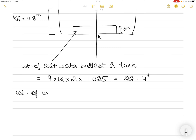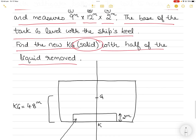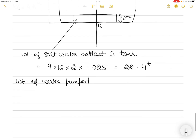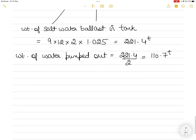The weight of the liquid pumped out is half of the total, because half the liquid was removed. So: 221.4 ÷ 2 = 110.7 tons. Alternatively, you could have used 9 × 12 × 1 meter (half the height) × 1.025 to get the same result. Either approach works.